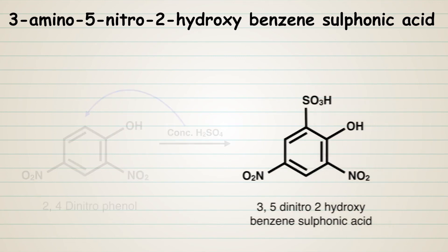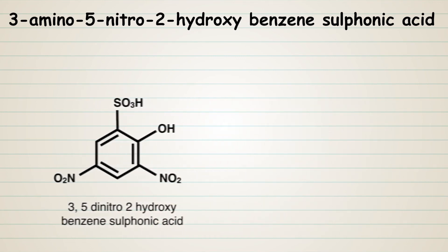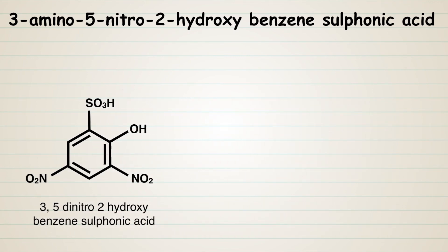Finally, partial reduction is carried out in the presence of magnesium in ether to give 3-amino-5-nitro-2-hydroxybenzene sulfonic acid.